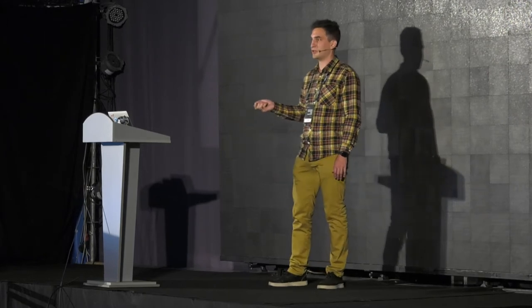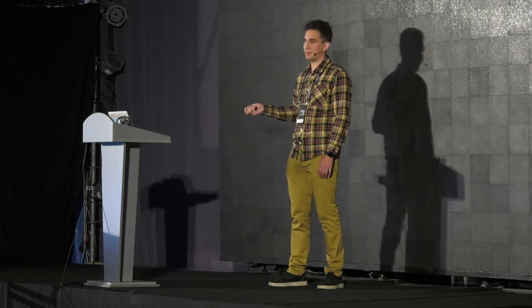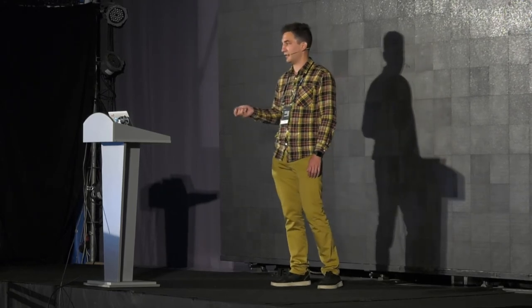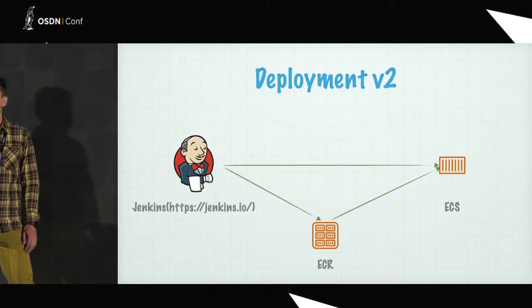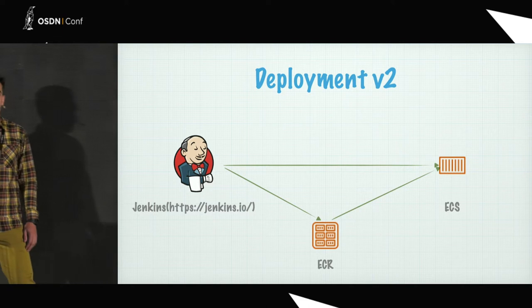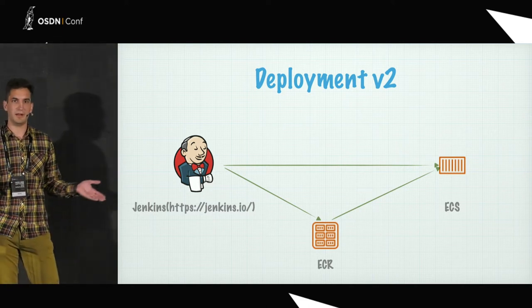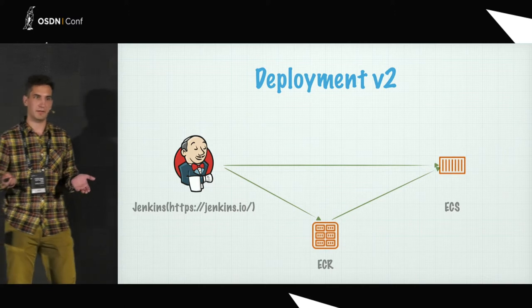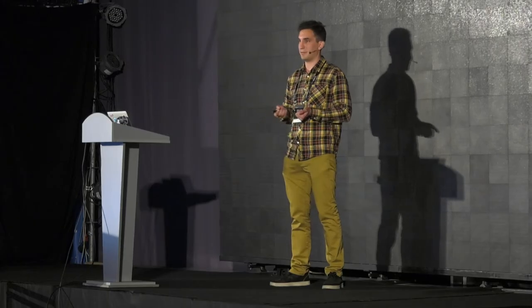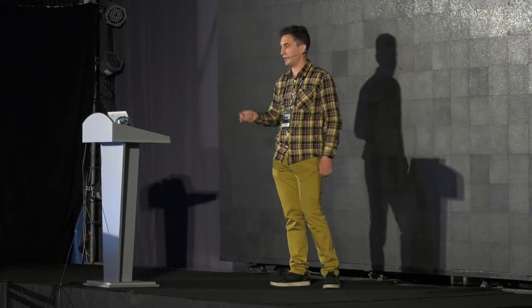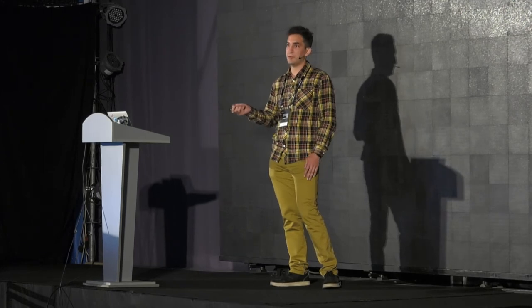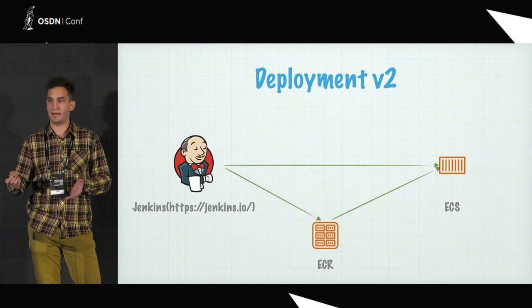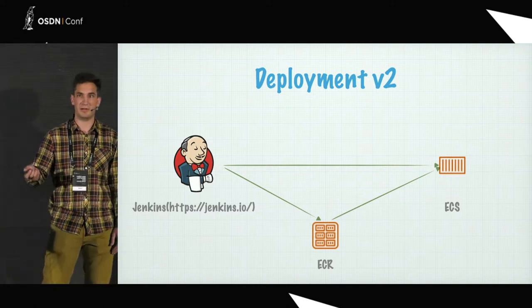After that, we switched from Docker Hub to ECR, also an AWS service, and from EC2 instances to Elastic Container Services. We had multiple clusters and, at the time, already had three different services and three different environments — nine different configurations in total — and we already had production. Jenkins built a Docker image, pushed it to Elastic Container Registry, and then triggered redeployment on the container service.